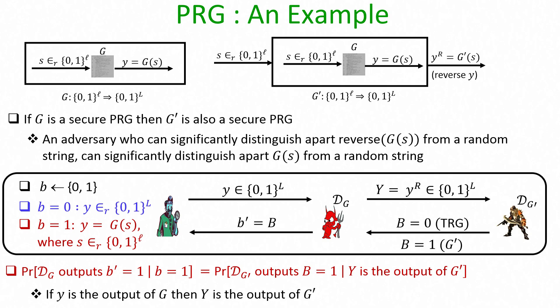That brings us to the end of this lecture. To summarize: we have seen the primitive of pseudo random generators — deterministic algorithms that expand their input to produce an output significantly larger than the input, where the output looks almost identical to that of a truly random generator. We have seen various equivalent definitions of pseudo random generators and how we can parallelly compose pseudo random generators a polynomial number of times to obtain a new secure pseudo random generator. I hope you enjoy this lecture. Thank you.